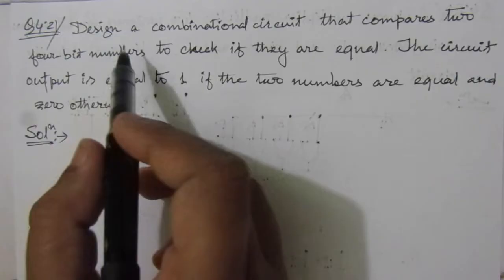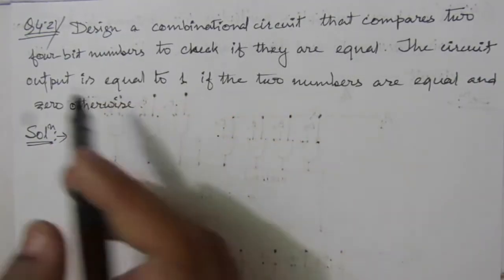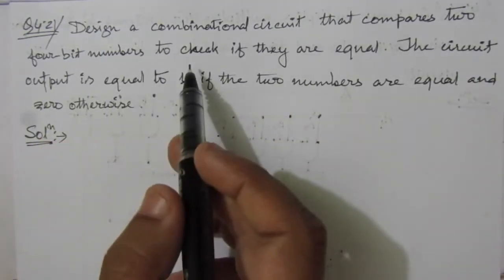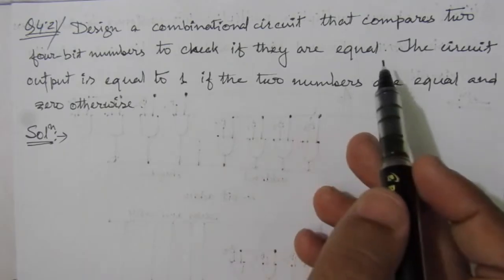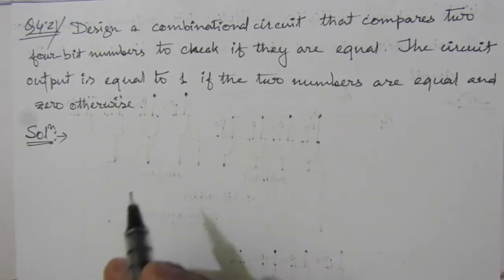The problem is design a combinational circuit that compares two 4-bit numbers to check if they are equal. That means we have to compare the two numbers and check whether they are equal or not. Whenever the two numbers are not equal, the circuit will give output 0. If the two numbers are equal, the circuit output should be 1.